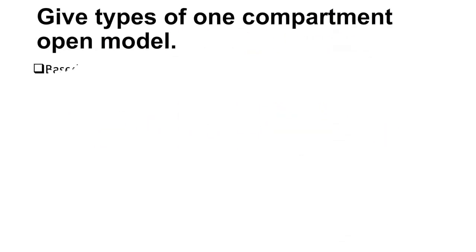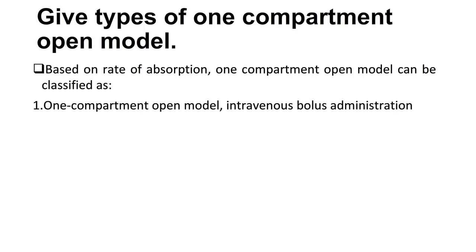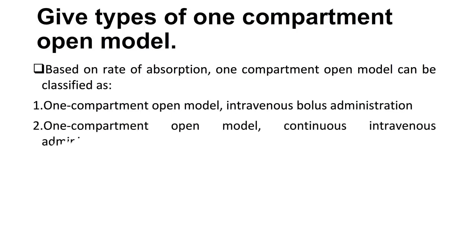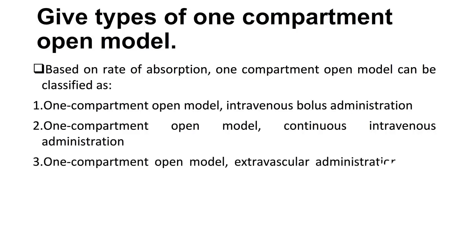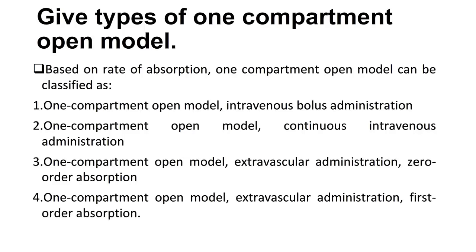Give the types of the one-compartment open model. Based on rate of absorption, the one-compartment open model can be classified as follows: 1. One-compartment open model, intravenous bolus administration. 2. One-compartment open model, continuous intravenous administration. 3. One-compartment open model, extravascular administration, zero-order absorption. 4. One-compartment open model, extravascular administration, first-order absorption.